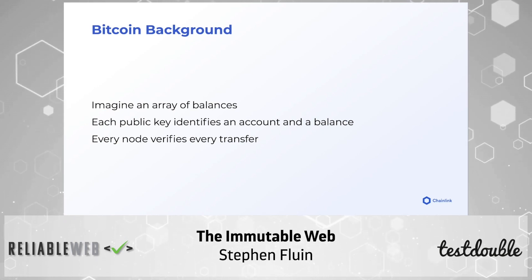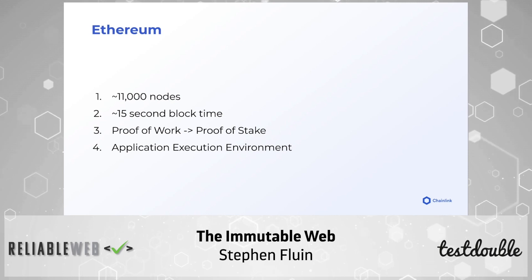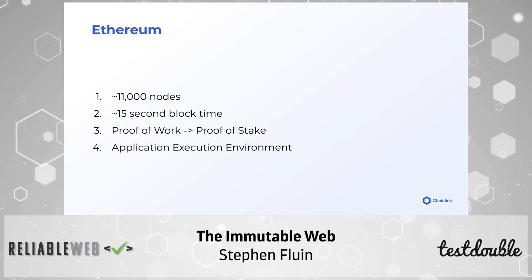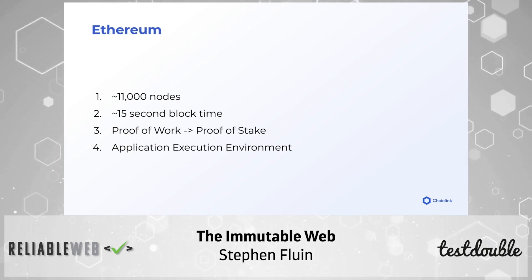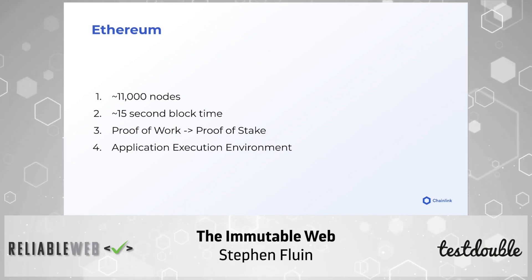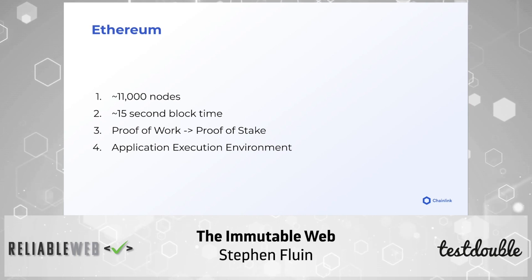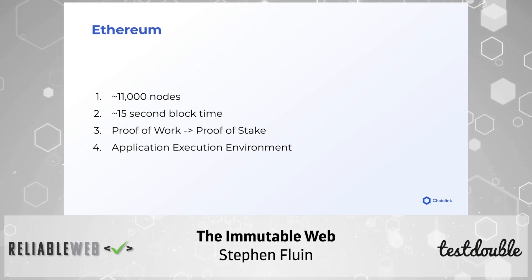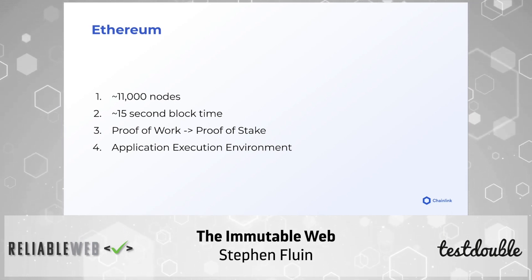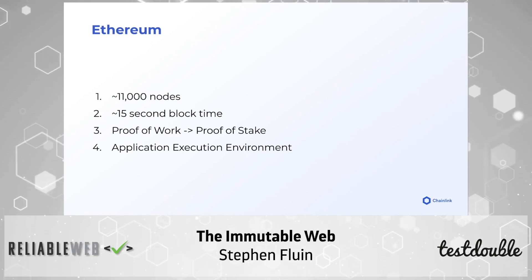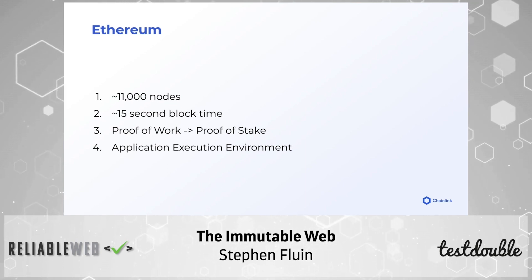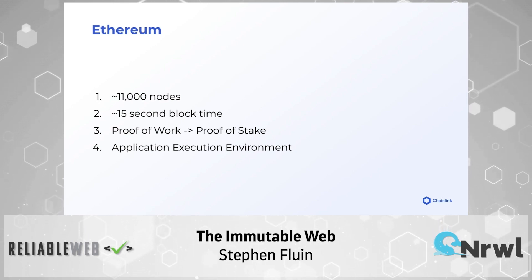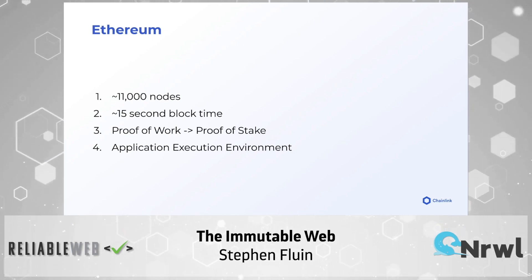Ethereum looks similar in a few ways — it's also got around 11,000 nodes doing verification, but instead of a 10-minute block time it has a 15-second block time, so transactions are processed much more quickly. It's currently proof of work, but they're working on a migration to proof of stake, where instead of spending millions of dollars on mining rigs and high-end graphics cards, you basically buy the currency. That stake in the network gives you buy-in and proves the network will continue being successful.